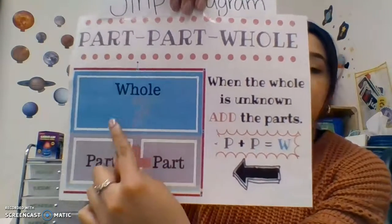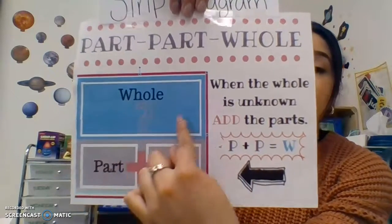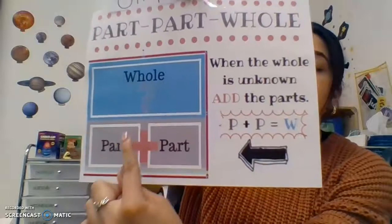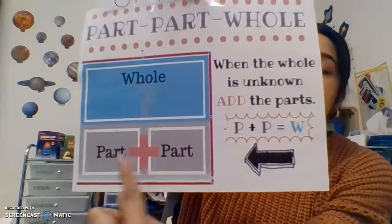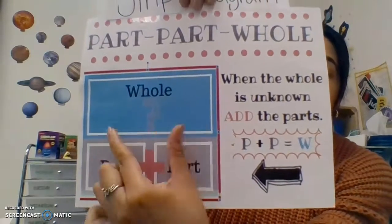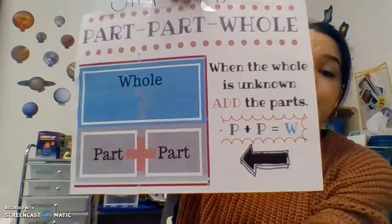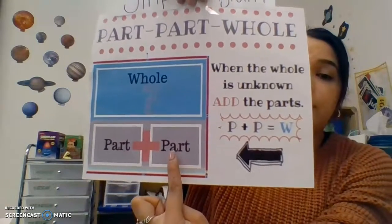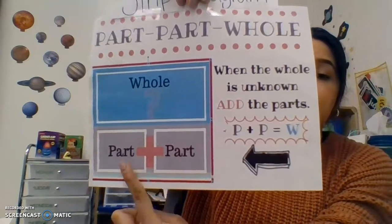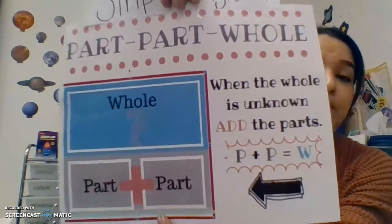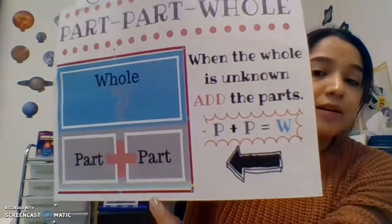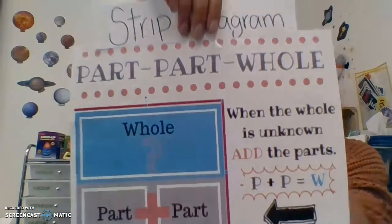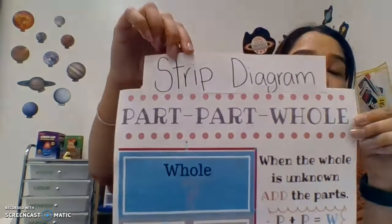When the whole is missing — we don't know the answer, the sum, or the whole — we are able to add the parts together to get our whole. If we have one part and another part, we add them together to get the whole. This is a part-part-whole strip diagram.